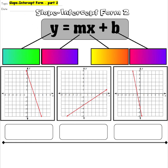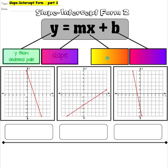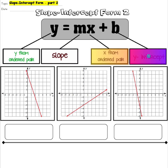As a review, we are going to go through what the equation is again. The equation for slope-intercept form is y equals mx plus b, where y is from an ordered pair, m is the slope, x is a value from the ordered pair, and b is the y-intercept.